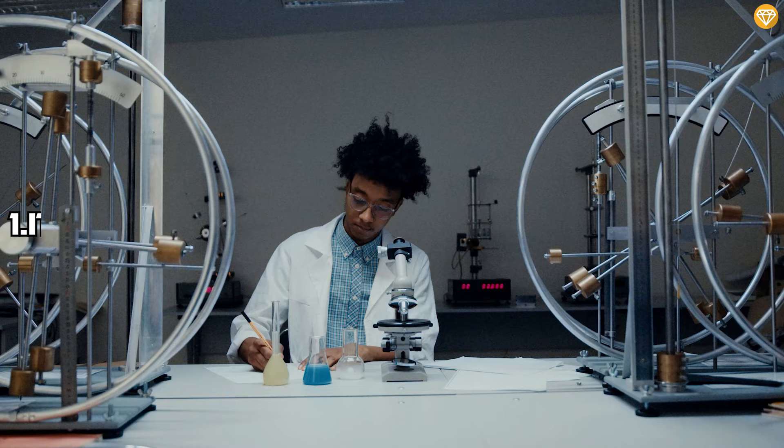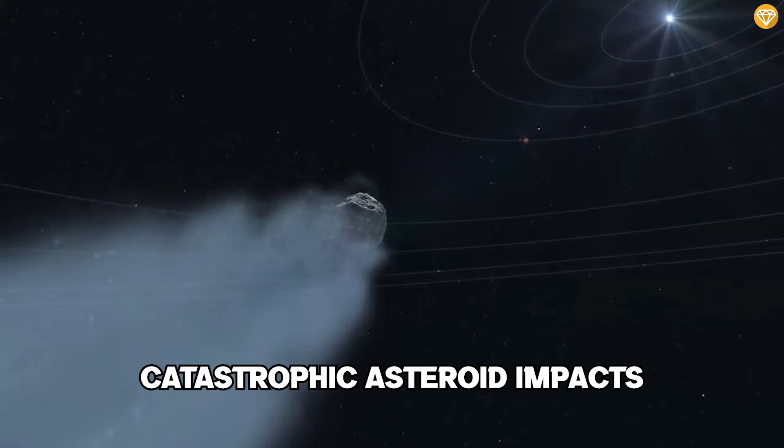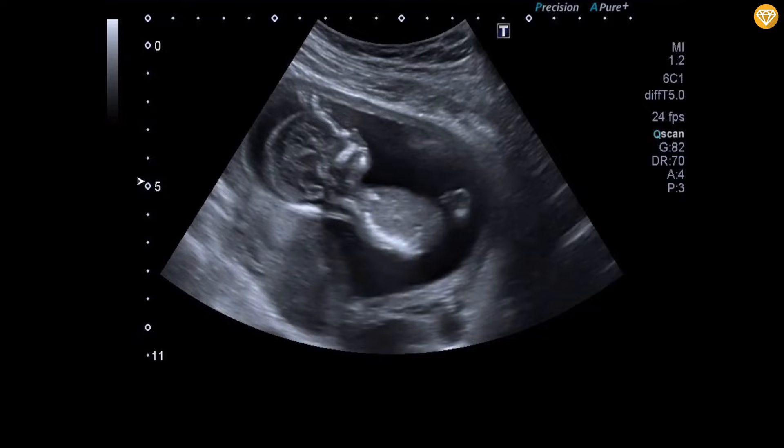1. It would be a world devoid of intelligent life. The moon's presence is crucial for complex life on Earth. It shields us from catastrophic asteroid impacts, stabilizes our axis, and enables diverse ecosystems to emerge. Without it, the probability of complex life would diminish.